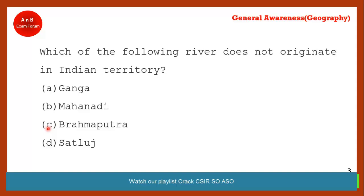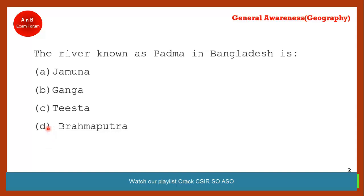Coming to the next question: which river is known as Padma in Bangladesh? The correct answer is Ganga. When the Ganga river enters Bangladesh it is known as Padma. Also, when Brahmaputra enters Bangladesh it is known as Jamuna — not Yamuna, but Jamuna. So the correct answer for this question is option B — Ganga.